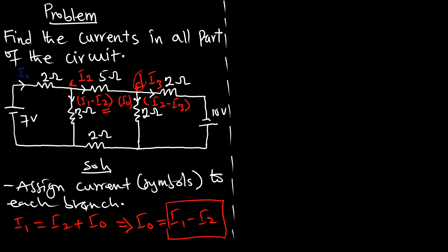At node d, the current divides itself into i3 and i-prime, so that i2 equals i3 plus i-prime, which implies that i-prime equals i2 minus i3. That's why we put i2 minus i3 in place of i-prime. So now we have all our currents defined.